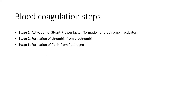So, this is definitive hemostasis. There are three stages. Stage one is the activation of Stuart-Prower factor — that is, we have to activate factor 10 to 10A. Then, using thrombin, we convert fibrinogen to fibrin. And then a strong clot is formed. The first process is activation of Stuart-Prower factor, and we have two mechanisms: intrinsic and extrinsic.